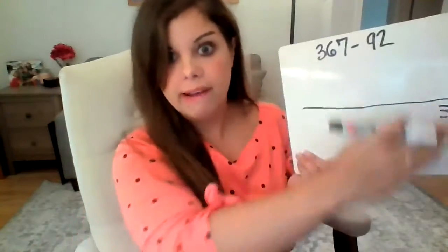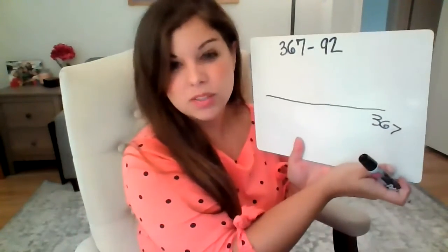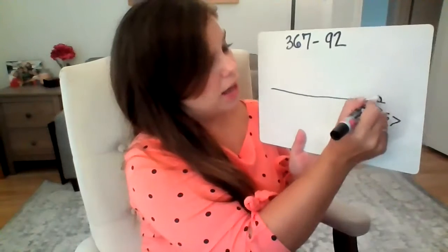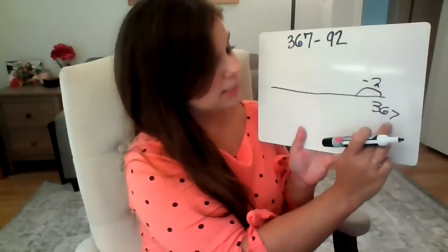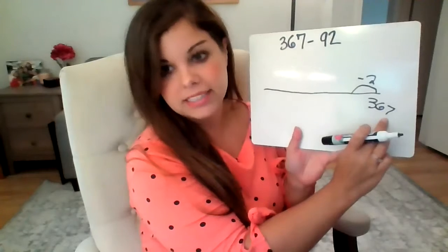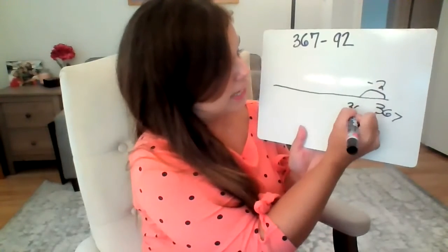Now, I can't just jump 92 in my head, so what I have to do is decompose 92. So I can jump back two in my head, no problem. So 367, I'm looking at the ones place, seven take away two is five, and the rest is going to stay the same.